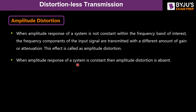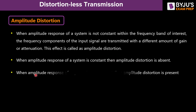When the amplitude response of a system is constant, amplitude distortion is absent. When the amplitude response of a system is not constant, different frequencies are multiplied by different gain factors, and this leads to amplitude distortion at the output.